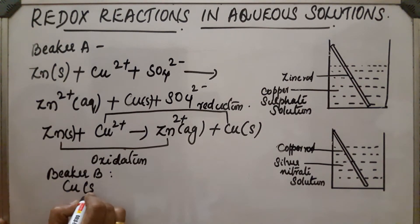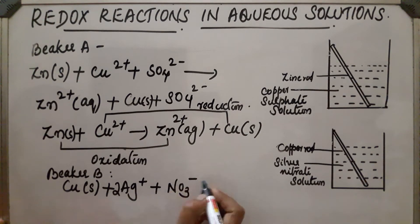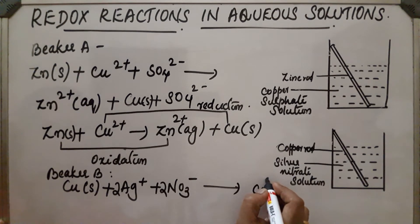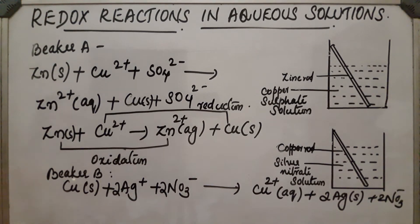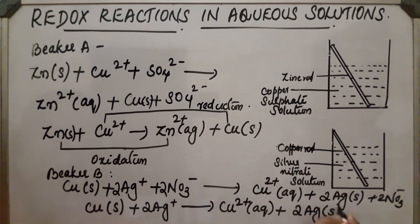The reaction in beaker B: copper solid plus silver nitrate ionizes into Ag⁺ and NO₃⁻. Nitrate ion does not take part in the reaction. Copper acts as the reducing agent as it has more electron releasing power than silver. It releases its electrons, gets converted into Cu²⁺, and moves into solution. So: Cu + 2Ag⁺ → Cu²⁺ + 2Ag(s).